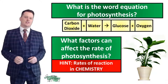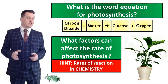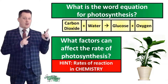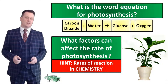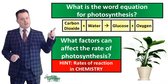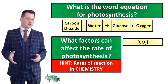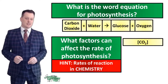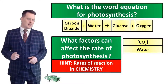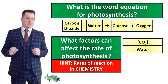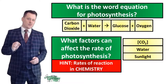If we recall our word equation for photosynthesis: carbon dioxide plus water gives us glucose and oxygen. There are some factors which affect the rate of photosynthesis which we can determine from this alone. If you have done the rates of reaction topic in chemistry, you will know that the concentration of the reactants can affect the rate of reaction. Our reactants are on the left-hand side of the arrow — carbon dioxide and water. So if we increase the concentration of carbon dioxide or the availability of water, we can get a faster rate of photosynthesis. This is also an endothermic reaction, so it needs to absorb energy from sunlight — more sunlight means a faster rate.